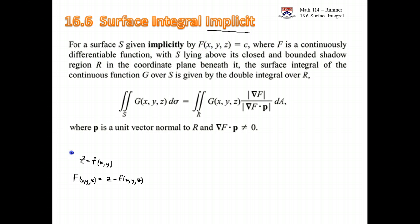So this is explicit, and when you're doing it with the capital F, you're doing it as if it's implicit. Sometimes you can still solve for z in your function and do it as explicit, but we can work with this formula too. The function needs to be continuous and differentiable, and there's some closed and bounded shadow region in the plane beneath it.